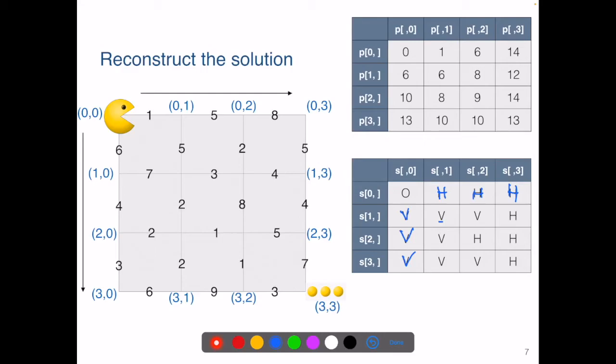Now looking at S(1,1). When we compute P(1,1), we know the choice is from above. So the last step getting to that point is a vertical move. So we write V here.